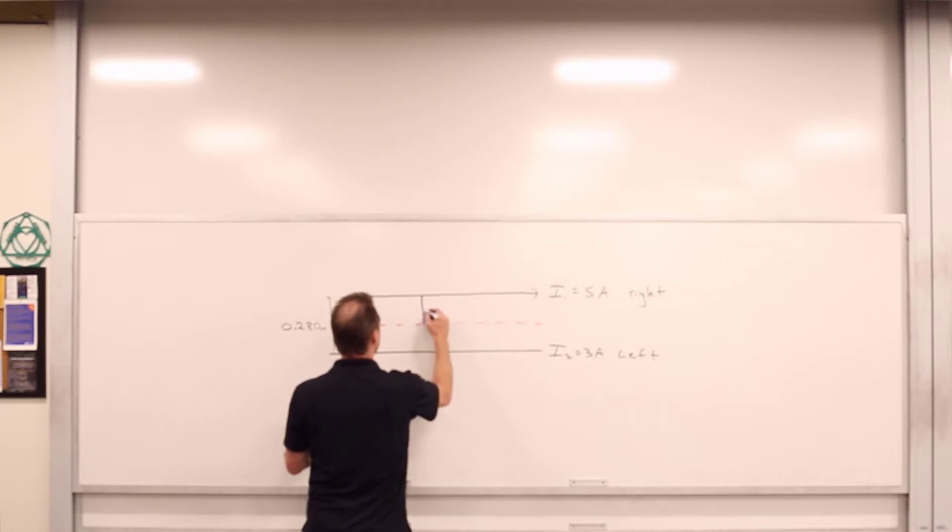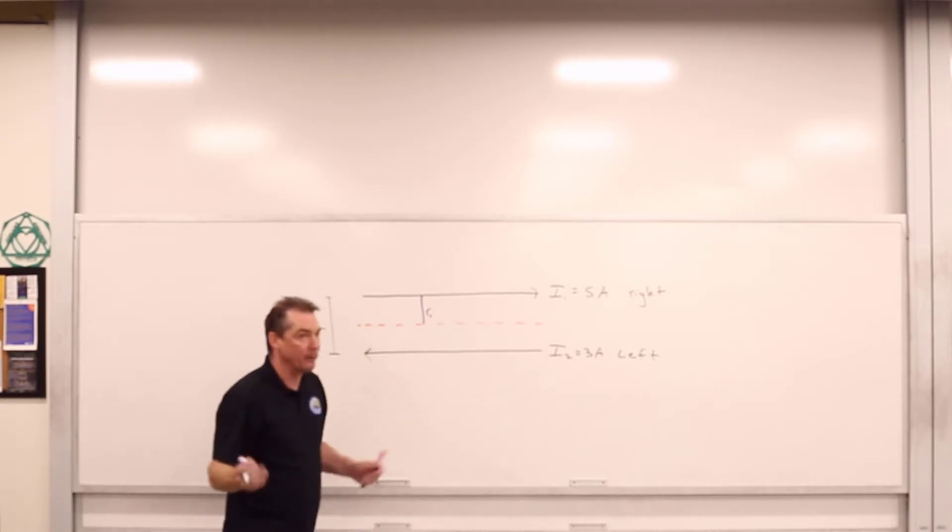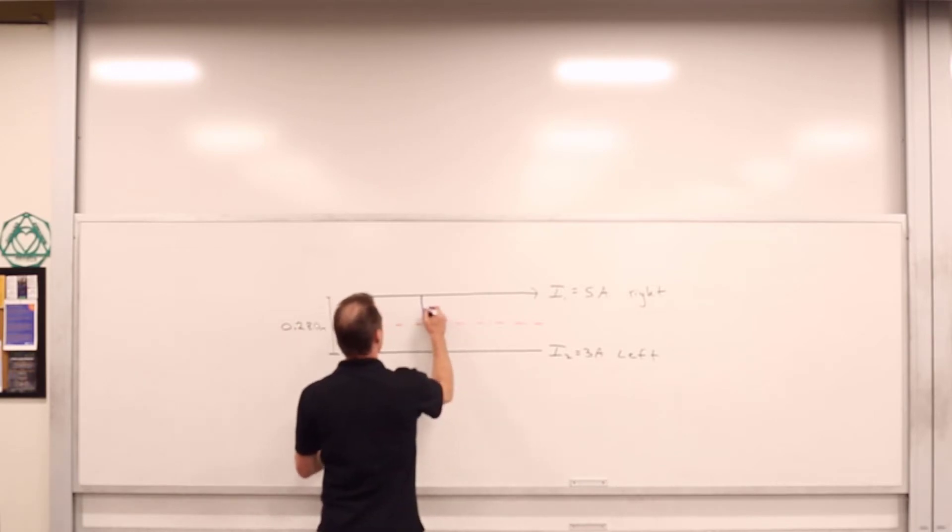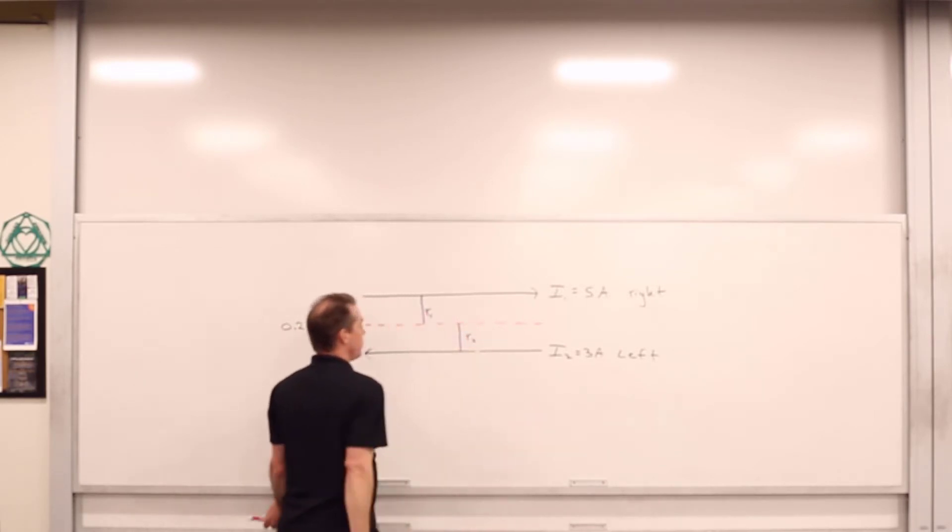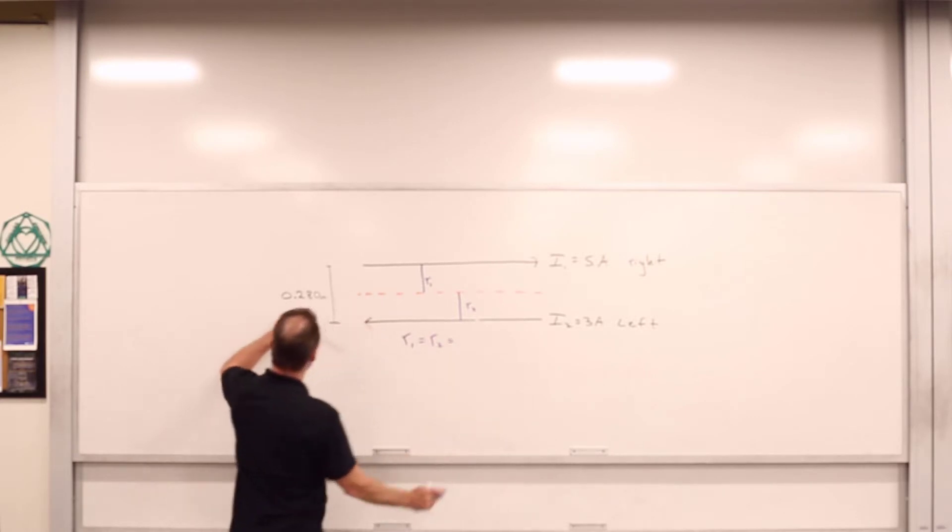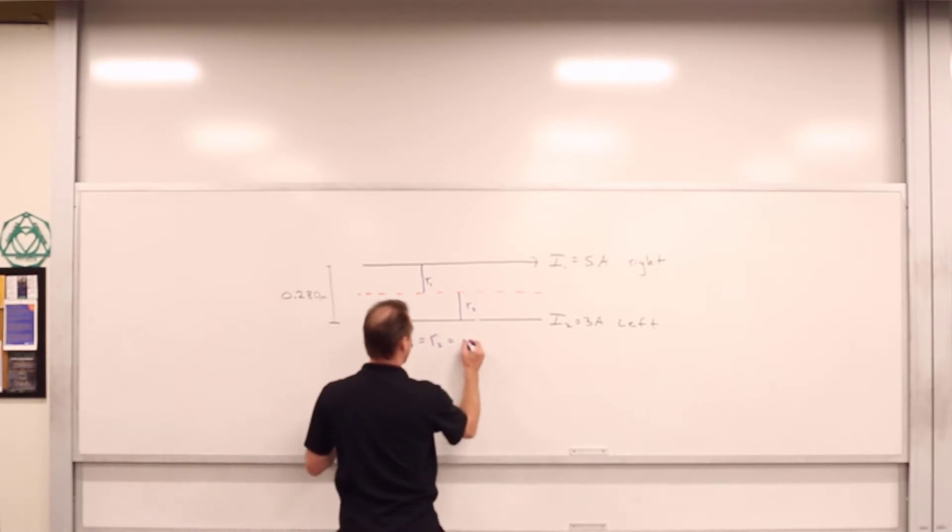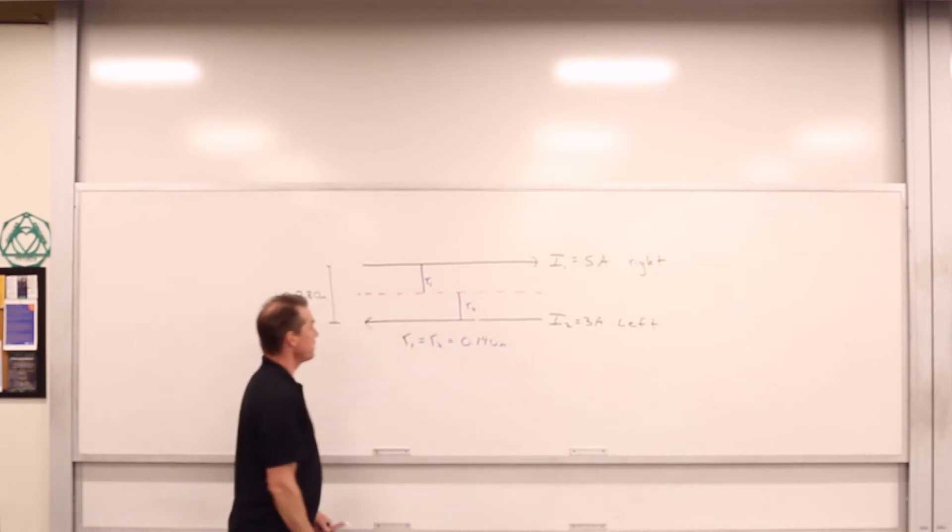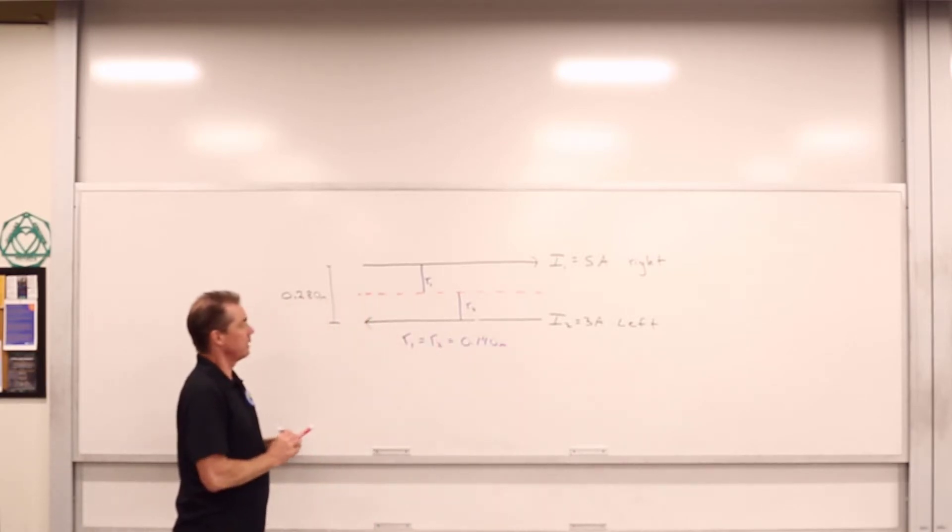So we're going to have some distances. We've got some distance which we can call R1, and we've got some distance R2 from I2. We have R1, in this case it's equal to R2, equal to half of this distance since we're directly between them, 0.140 meters. That's good. And again, we want to know what is the magnetic field there.